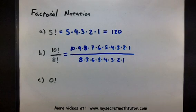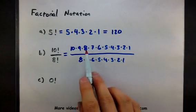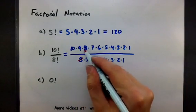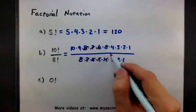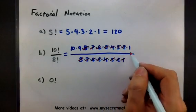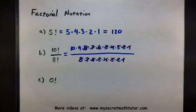And then borrow your simplifying rules for fractions to cancel out some common factors. So you'll notice in the bottom and in the top, I have an 8. Those are gone. Same thing with the 7s, the 6s, the 5s, 4s, 3s, 2s, and 1s. In fact, everything cancels out except for just the 10 and the 9.